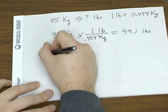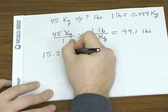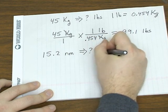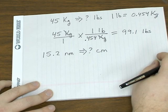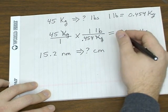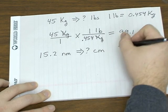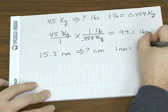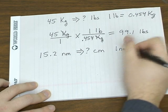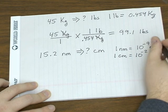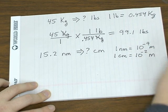One last example. Let's look at 15.2 nanometers and convert that to centimeters. So this is all metric, and 1 nanometer is equal to 10^-9 meters. 1 centimeter is equal to 10^-2 meters.